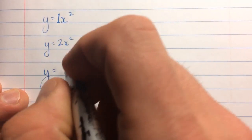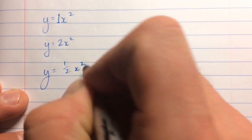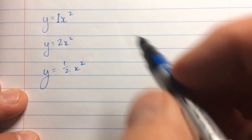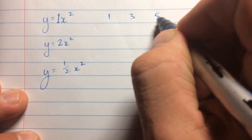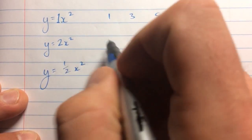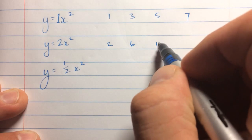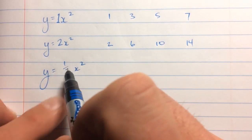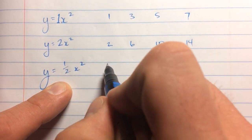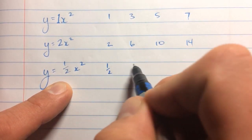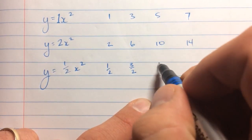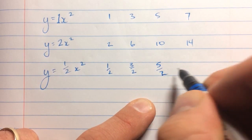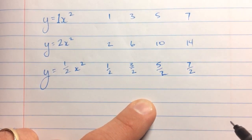Let's try the opposite. What happens if we have 1 half x-squared? The same thing will happen. Before we had a pattern of 1, 3, 5, 7. With the coefficient of 2 we doubled it to be 2, 6, 10, 14. Now with 1 half, it's going to be half of what it was. So it'll be 1 half, 3 halves — which is the same as 1 and 1 half — 5 halves, and 7 halves, and so on.